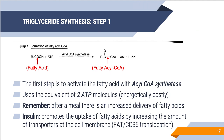The first step in triglyceride synthesis is to activate the fatty acid with the enzyme acyl-CoA synthetase, forming a fatty acyl-CoA. This process uses two ATP molecules to facilitate the production of fatty acyl-CoA. After a meal, increased delivery of fatty acids pushes that reaction towards fatty acyl-CoA production. Insulin also helps with fat uptake and storage — being anabolic, it helps bring those free fatty acids into cells so they can be formed into triglycerides for storage.